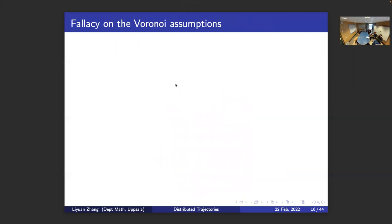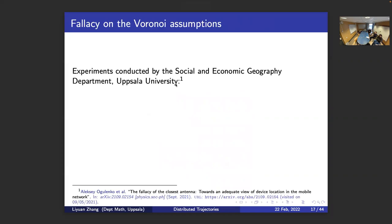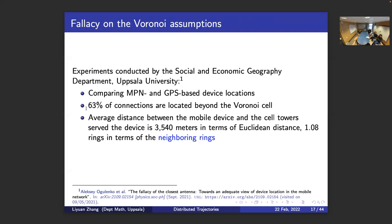However, this is all based on the Voronoi assumption, which is not necessarily correct at all times. According to experiments conducted by the socio-economical geography department, they concluded the fallacy of this assumption. They compared recorded locations from both mobile phone network records and GPS devices and found that 63% of connections were actually beyond the Voronoi polygon. The average distance between the mobile device and the cell tower serving it is more than 3,500 meters, and the most important finding is 1.08 rings — which I'll elaborate on in the following slides.